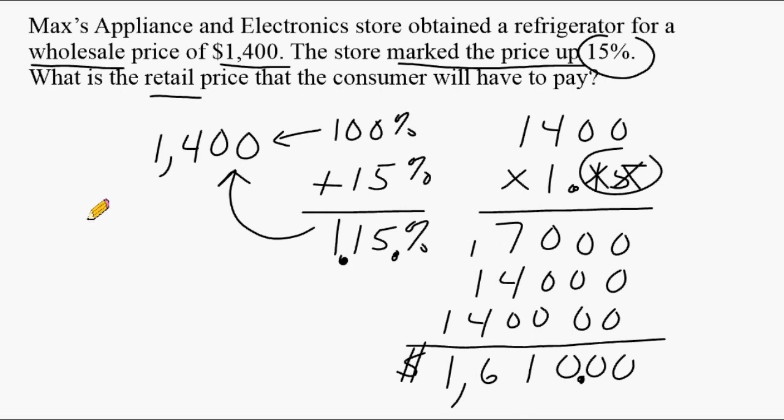Now another way that some people like to approach this problem is they just like to multiply 1,400 by 15% but that will only show you how much the price increases by. That's not going to give you the retail price. That's just how much of an increase is there. So if we were to do that, let's see what we would end up getting.